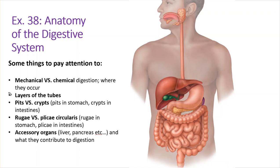We're going to talk about the layers of the tubes of your GI tract because there are some repetitive structures you'll see in each area. Then pits versus crypts — the epithelial lining of your stomach versus your small intestine has some different structures. Same thing with rugae versus plicae circularis. Rugae are the big wrinkles in your stomach that help grind food down. Plicae circularis in the small intestine has a slightly different job. Then we'll look at accessory organs: the liver, pancreas, gallbladder, tongue, and salivary glands.